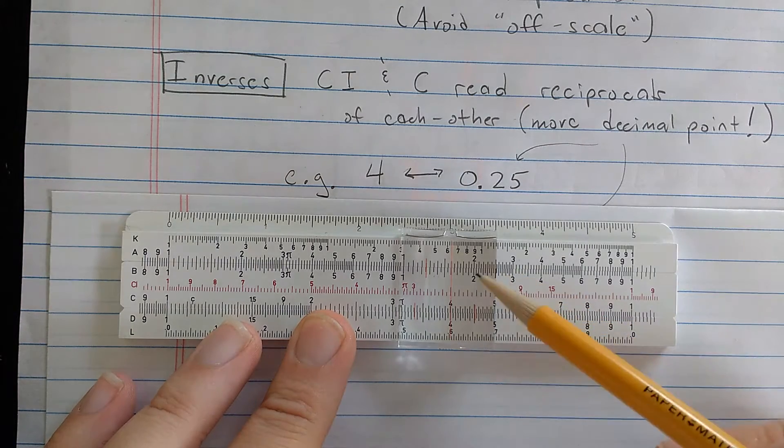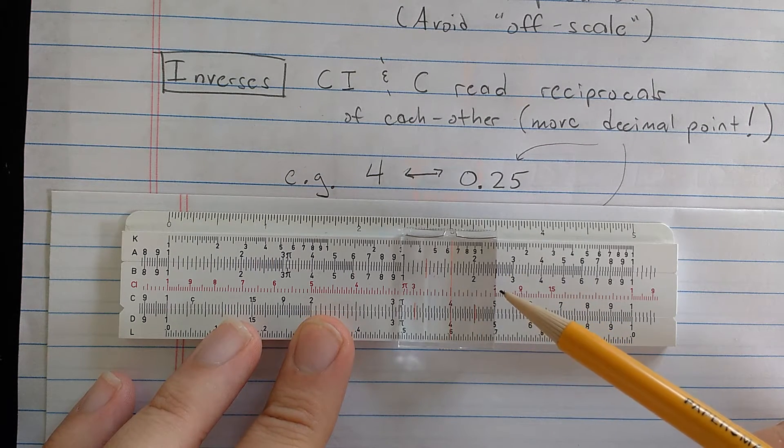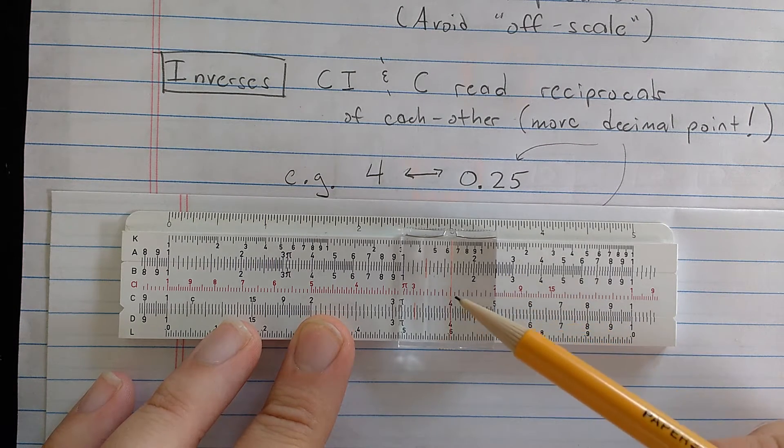then on the CI, the red scale above it, you'll see it reads, here's the 2 right under the glass here, 2.5.